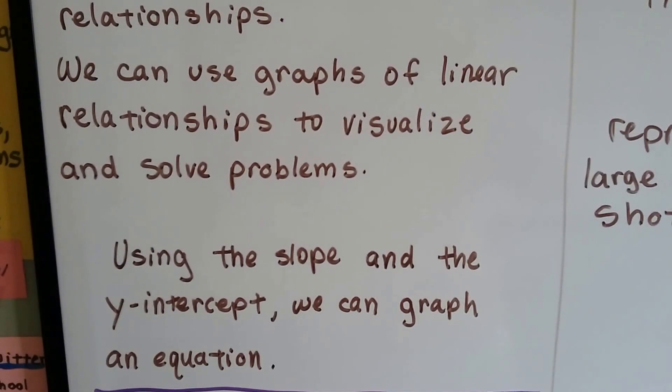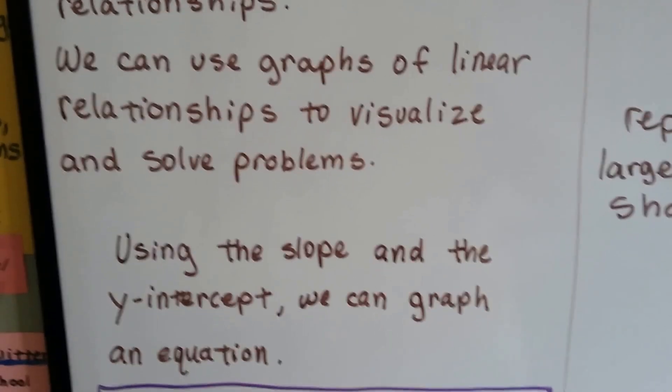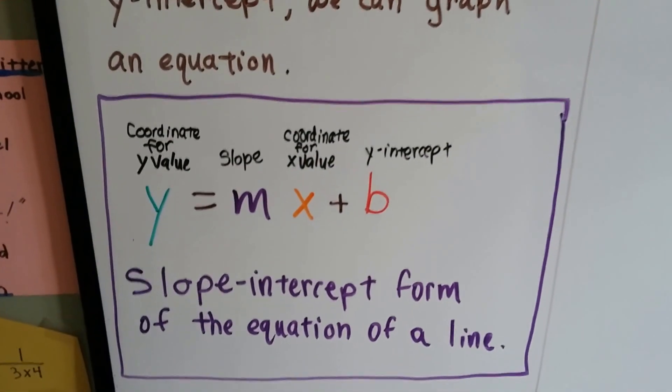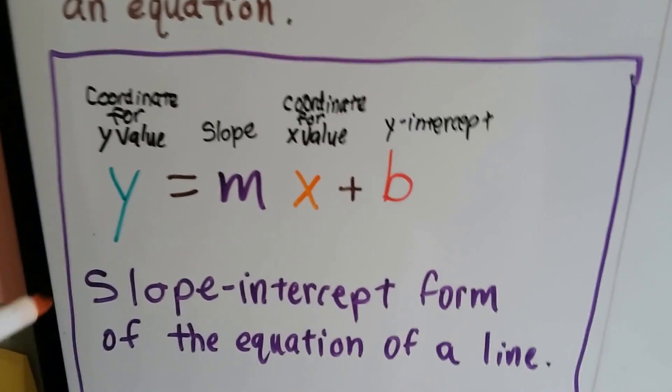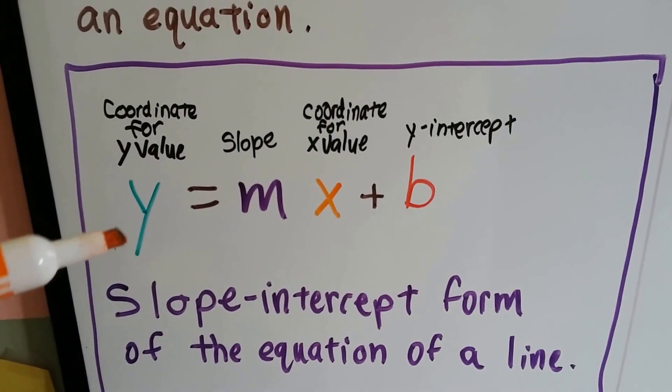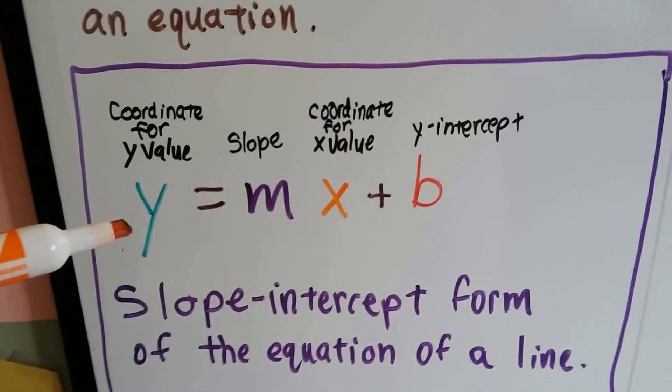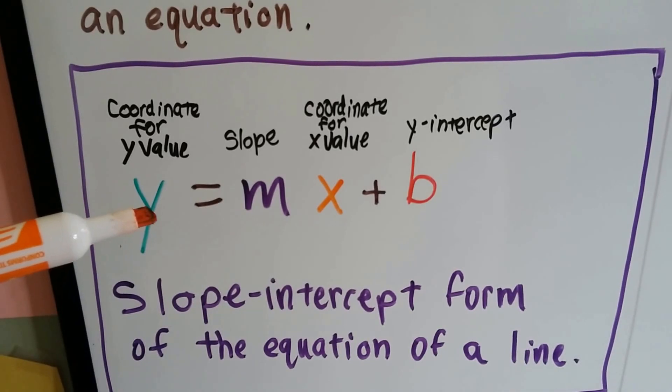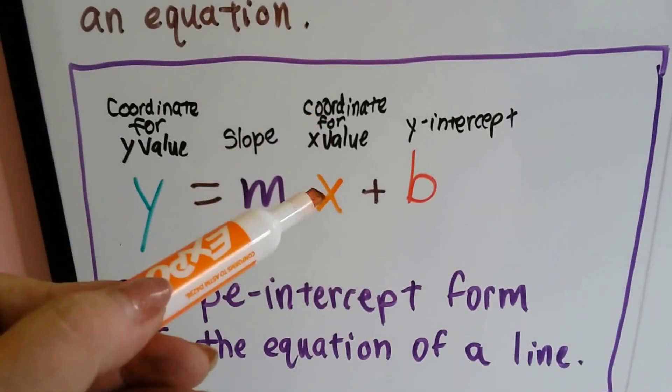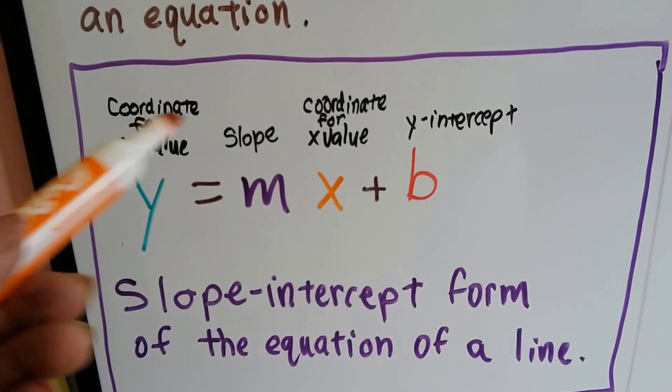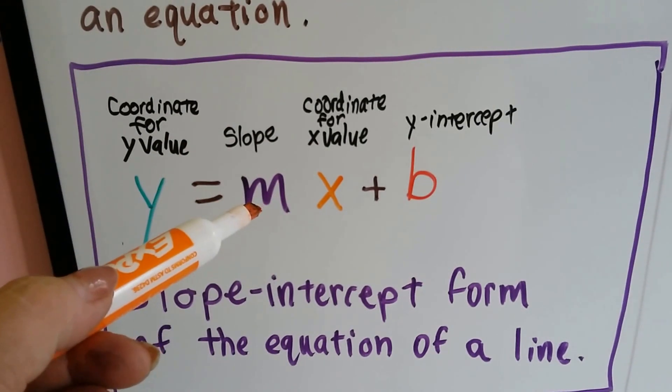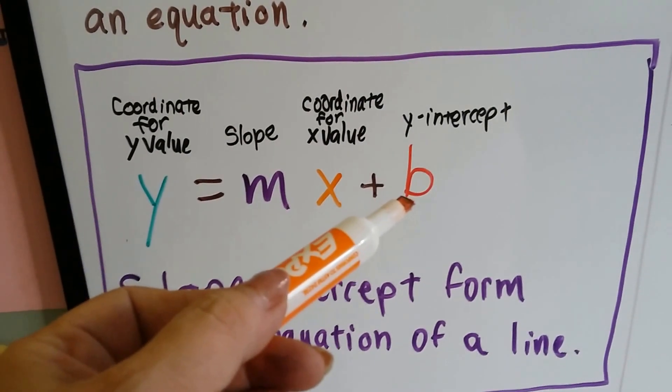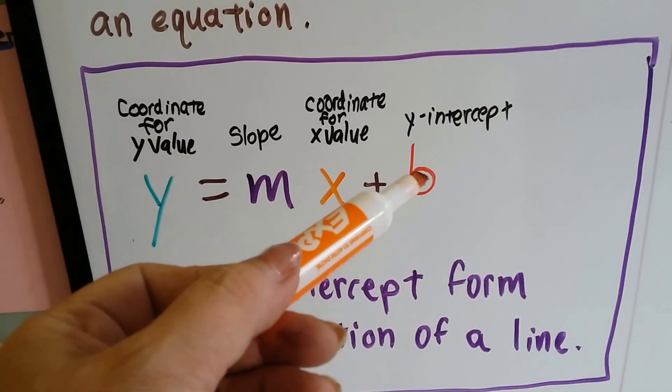Using the slope and the y-intercept, we can graph an equation. This is the slope-intercept form of an equation: y equals mx plus b. Each one of these has a purpose. This y is the coordinate for the y-value in a table, and the x is the x-coordinate that goes with that y-coordinate. The m is the slope, the rise over the run, and the b is the y-intercept where our line crosses over the y-axis.